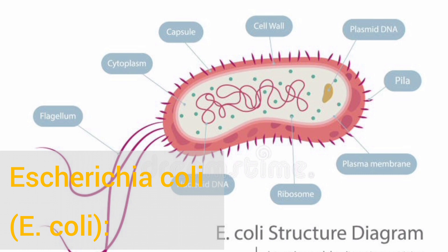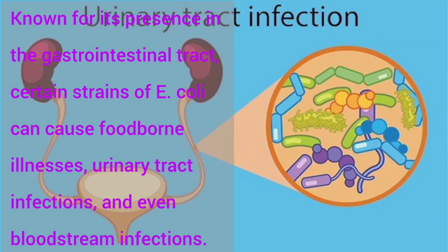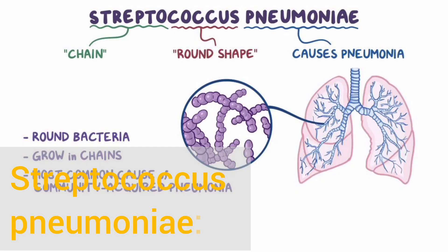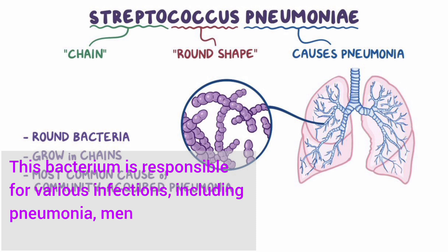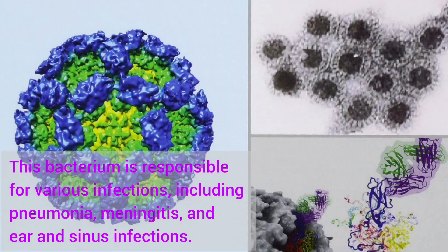Escherichia coli — known for its presence in the gastrointestinal tract, certain strains of E. coli can cause food-borne illnesses, urinary tract infections, and even bloodstream infections. Streptococcus pneumoniae — this bacterium is responsible for various infections, including pneumonia, meningitis, and ear and sinus infections.